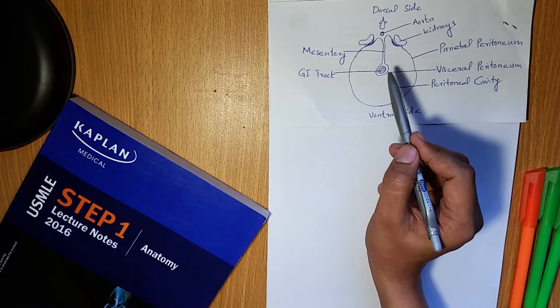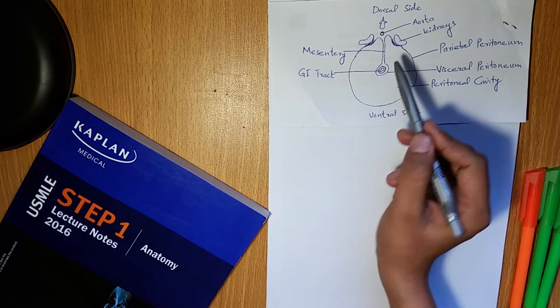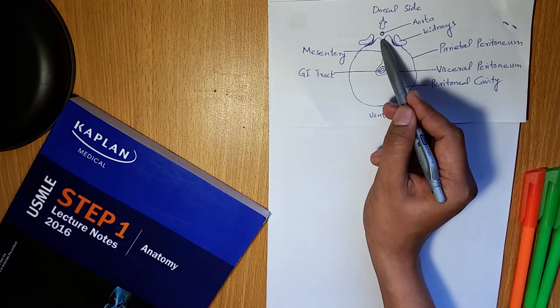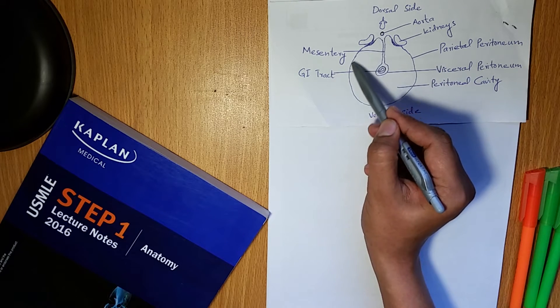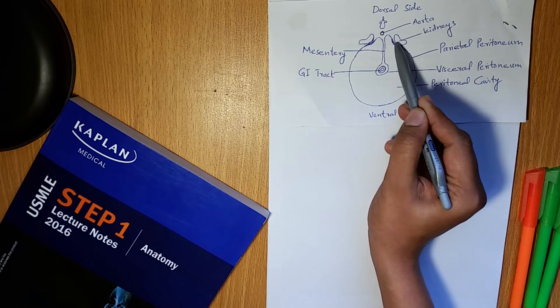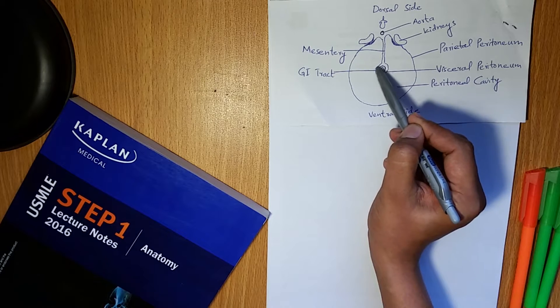The peritoneum is divided into two layers: the parietal layer and the visceral layer.